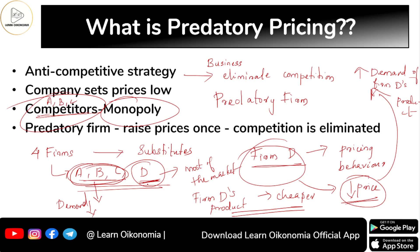Firms A, B, and C exit the market due to losses — they have no market share left. Firm D then has the complete market share. As a monopoly, firm D increases prices to recover the losses it had made earlier. This is the basic understanding of predatory pricing.